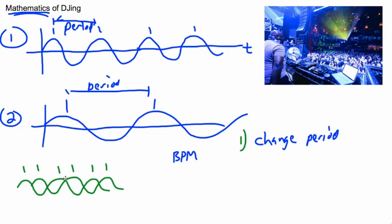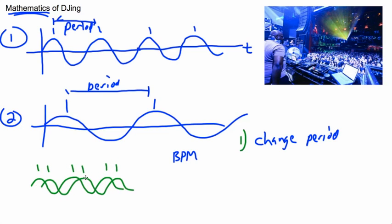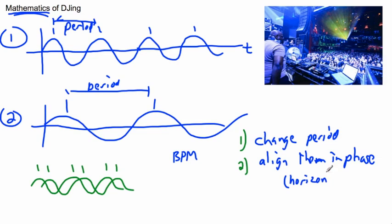You want them to line up in phase as well, so step two is to align them in phase. What I mean by that is to do a horizontal translation — in mathematics, you have to move your graph left and right. Whereas changing the period, that's when you do a horizontal stretch or compression. So I used to like doing it with turntables, with actual records, which is really fun because you can touch them. But now there are programs that do all sorts of things for you.